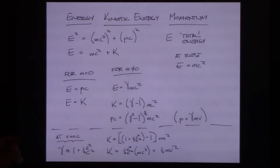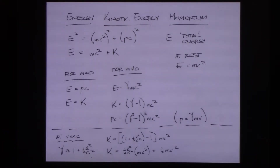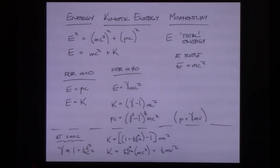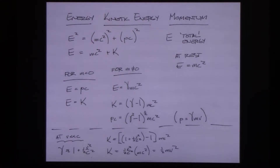A massless particle like the photon is always traveling at c — it can't speed up or slow down. In optics we talked about indices of refraction slowing light in materials, but that's not an individual photon slowing down; it's a photon-relay interaction with the material that slows the process. So photons on their own are stuck traveling at c at all times.